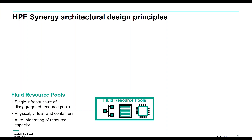Let's look at some of these design principles — what makes a composable infrastructure. Three key pillars are followed for any composable infrastructure. First, we need a fluid pool of resources. These resources could be compute, storage, or network, and they are the underlying basis for any composable infrastructure.